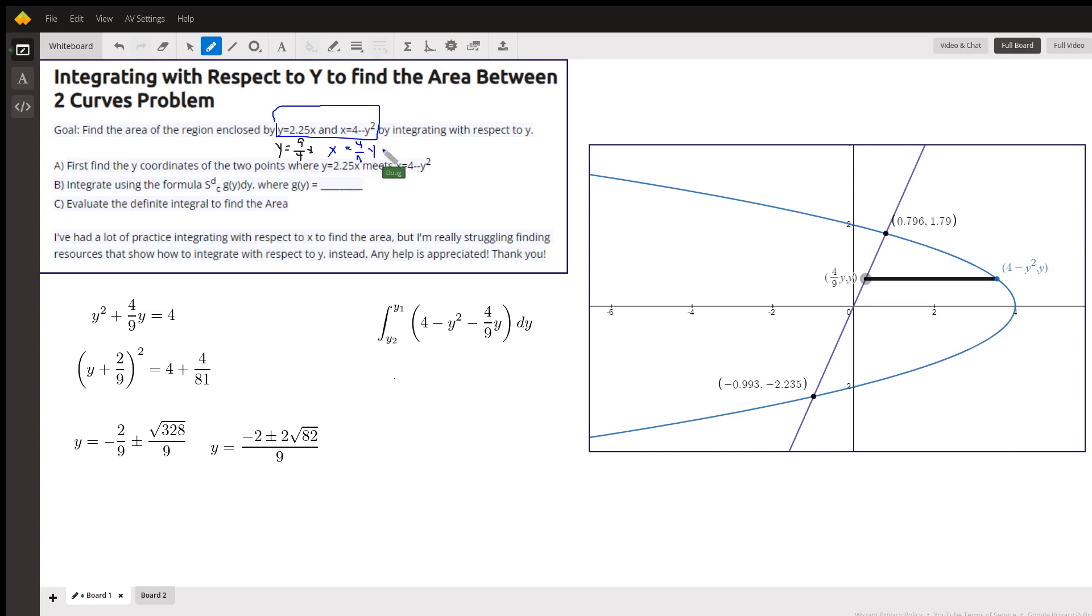Then you can use the substitution method to find the y coordinates where the two graphs meet. That's kind of what I showed here. I did it by completing the square rather than using the quadratic formula. This is going to turn ugly, so hopefully you're allowed to use decimal approximations instead of using these values when you do the integration.